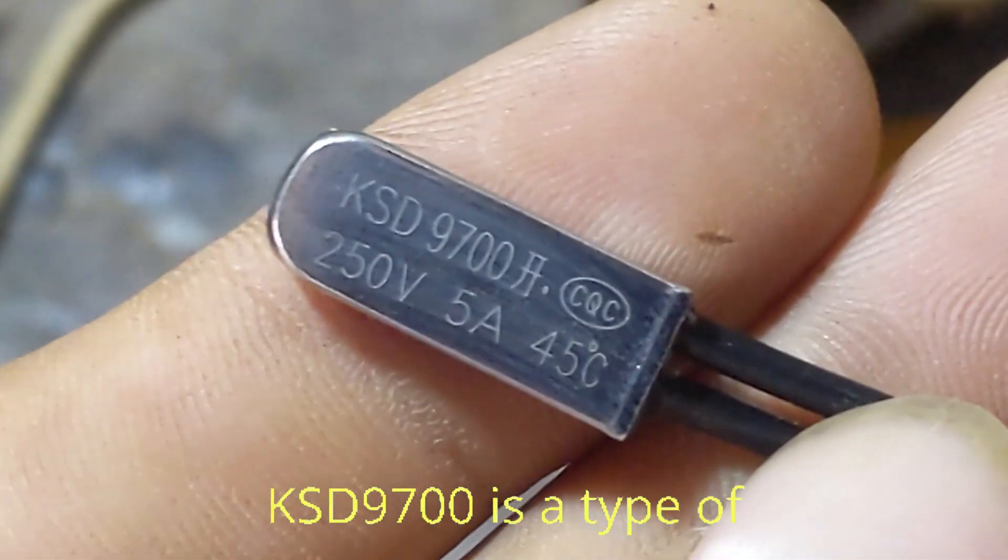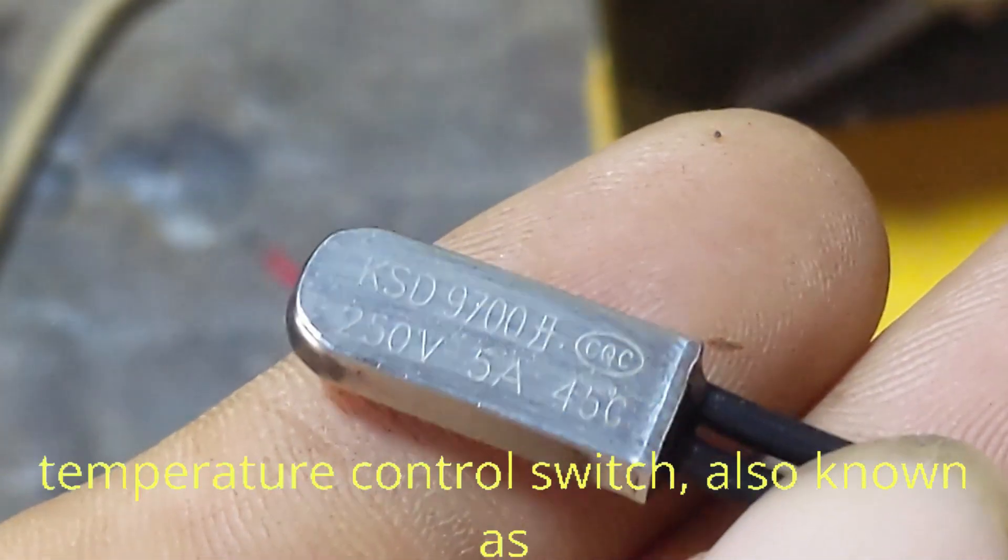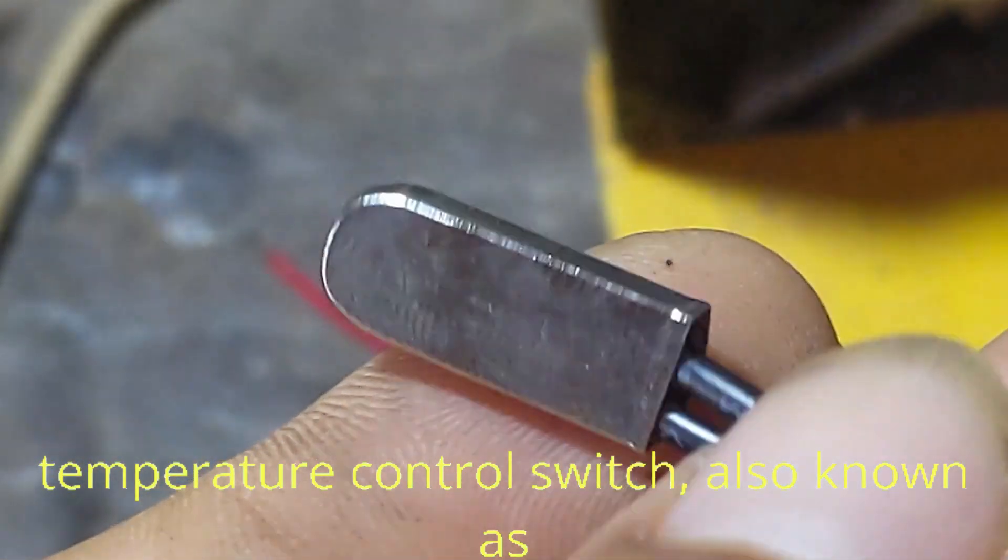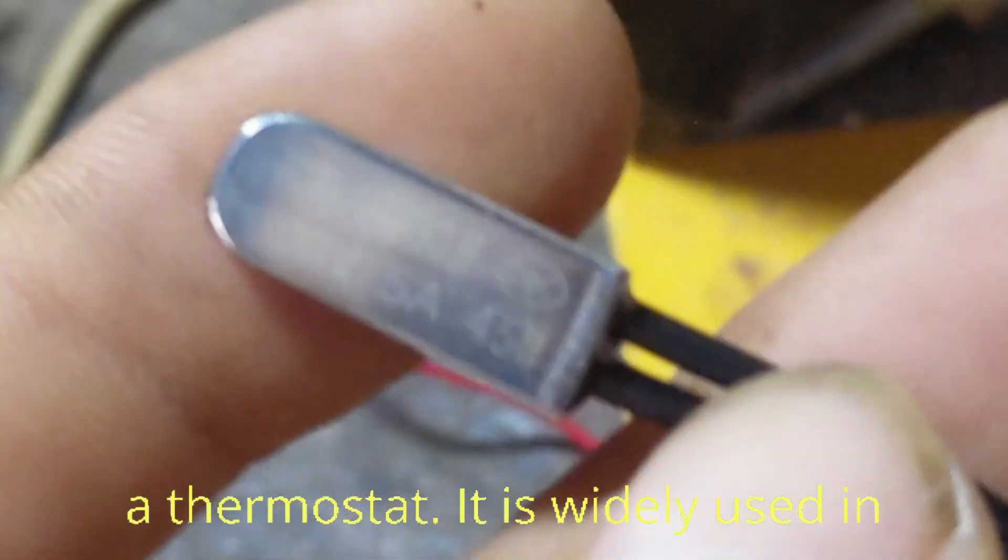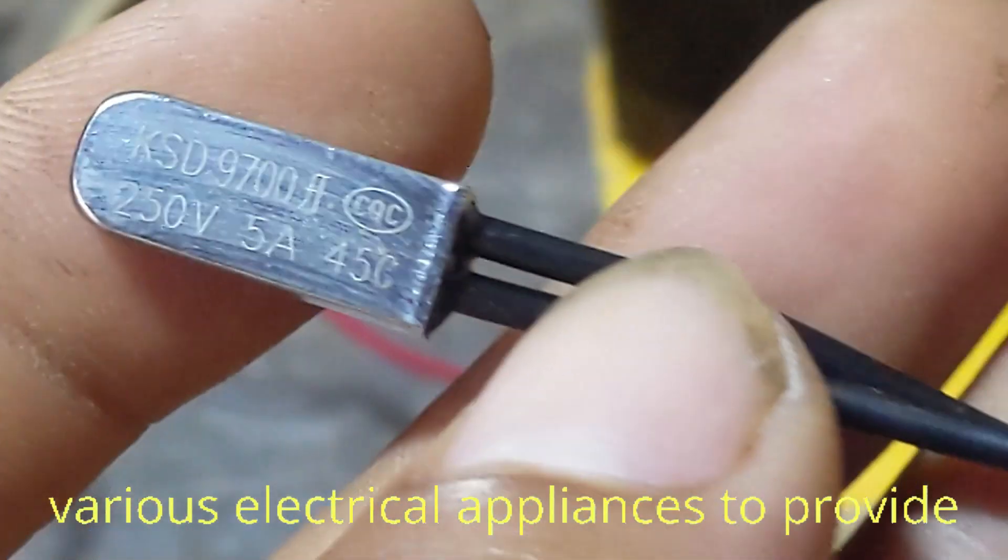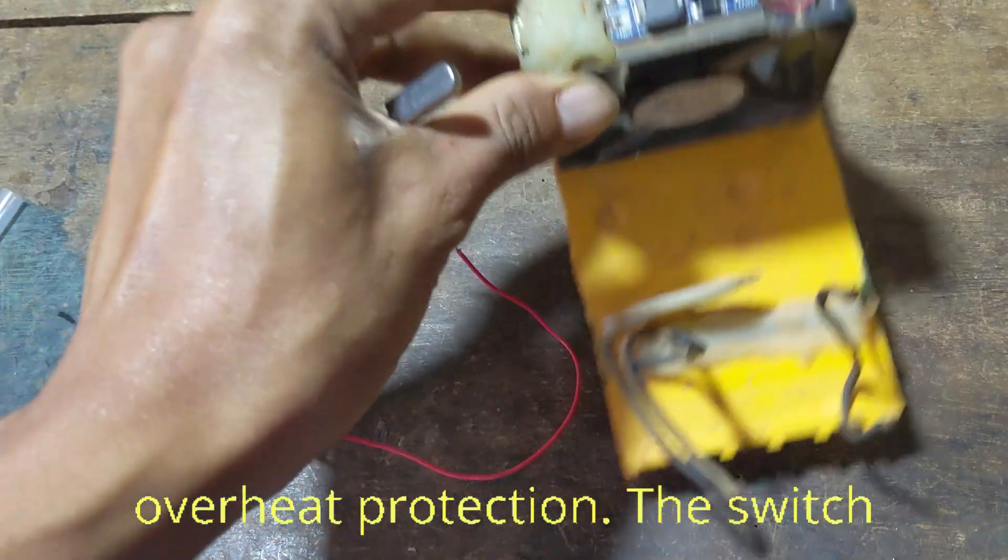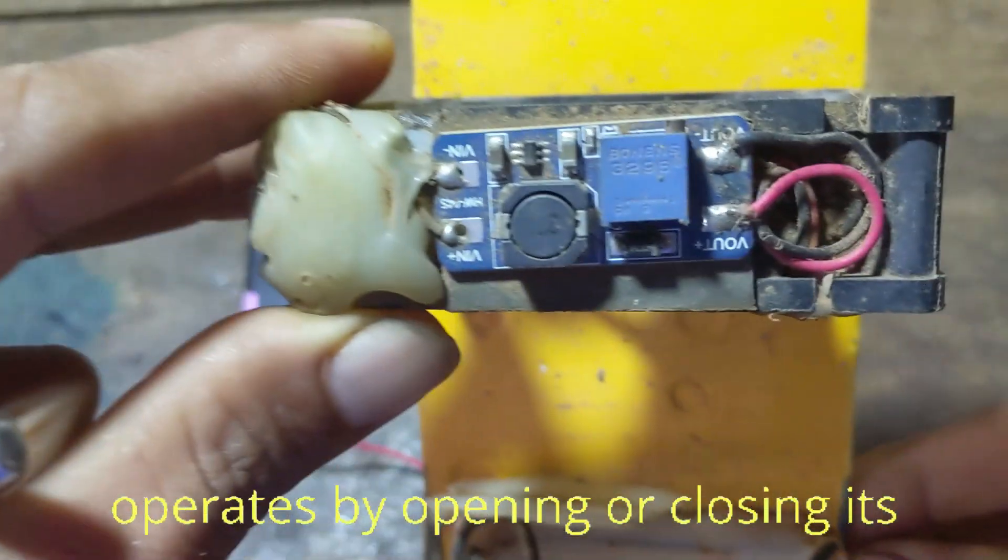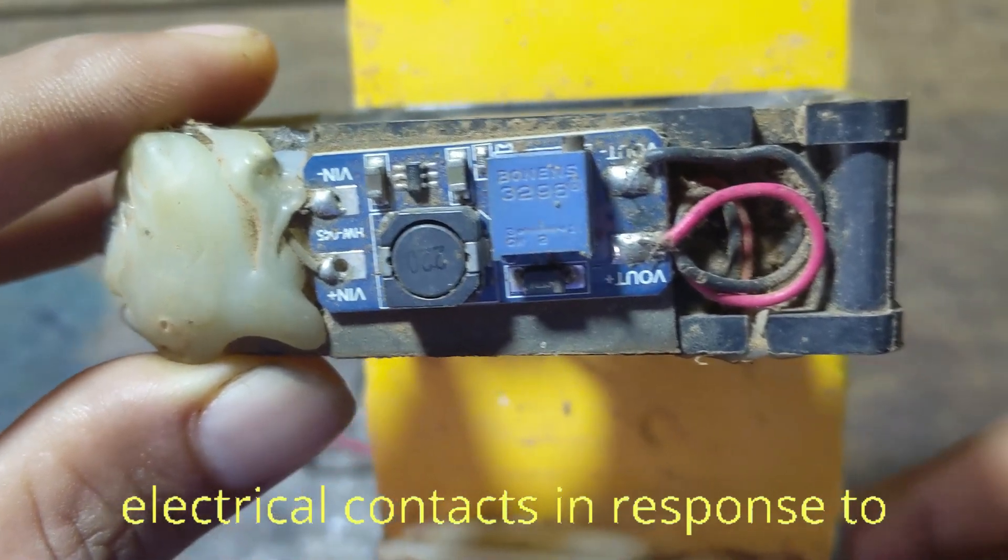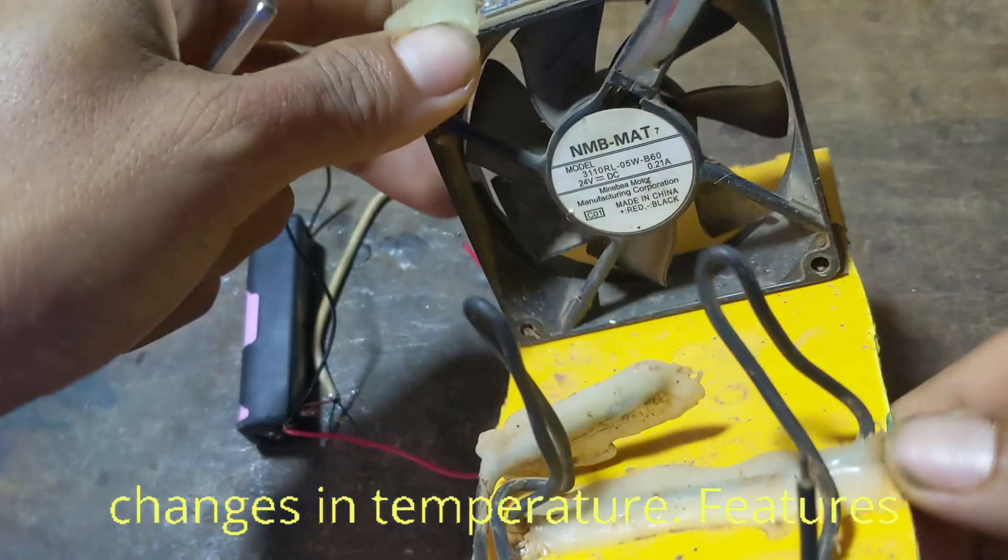The KSD 9700 is a type of temperature control switch, also known as a thermostat. It is widely used in various electrical appliances to provide overheat protection. The switch operates by opening or closing its electrical contacts in response to changes in temperature.